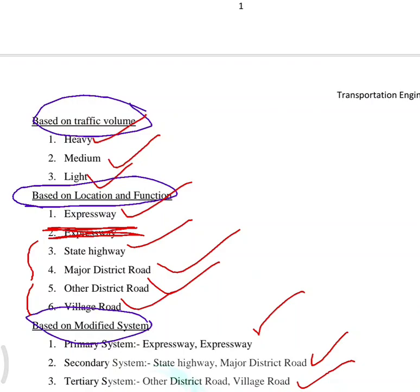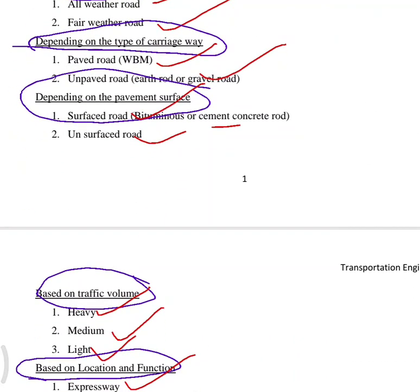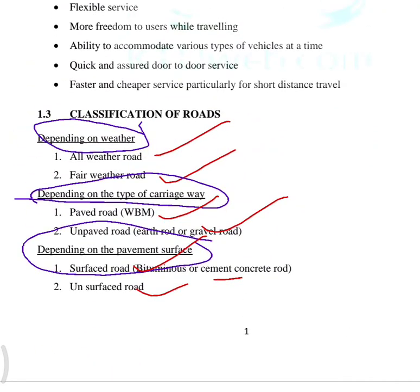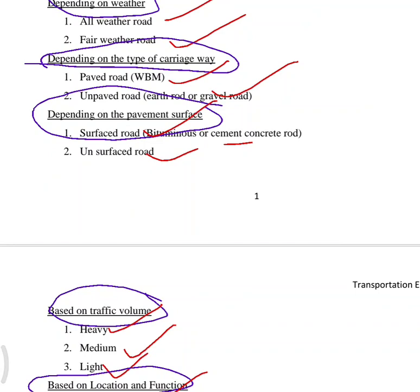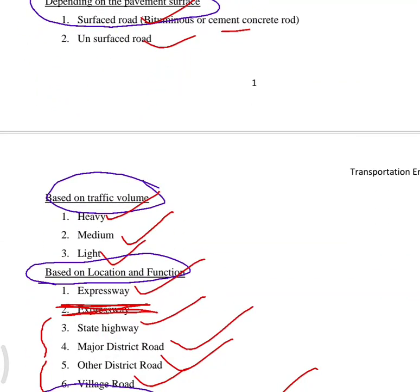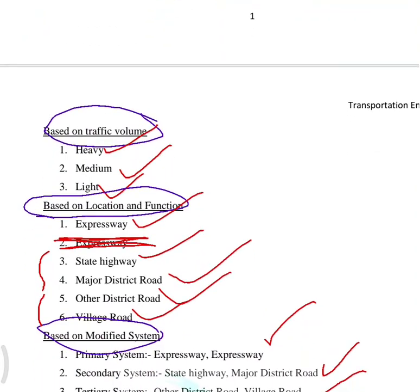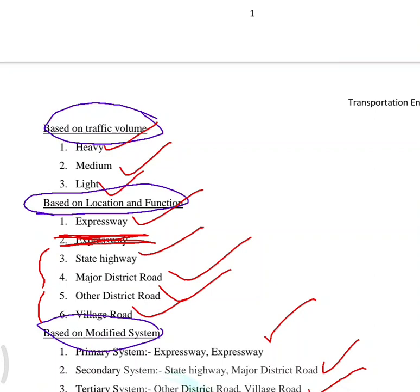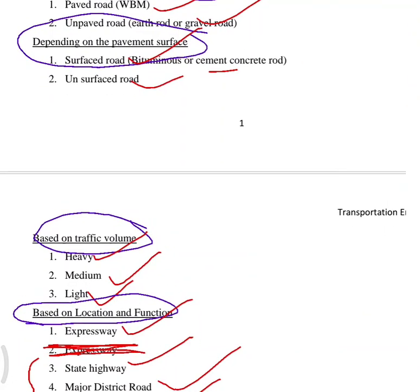I will show you the basics of the road. Based on weather, depending on the type of carriageway and pavement surface — surface road and unsurfaced road. The traffic is heavy, medium, and light. Based on location and function, you can have expressway. This is the primary, secondary, and tertiary classification. This is the classification of roads.